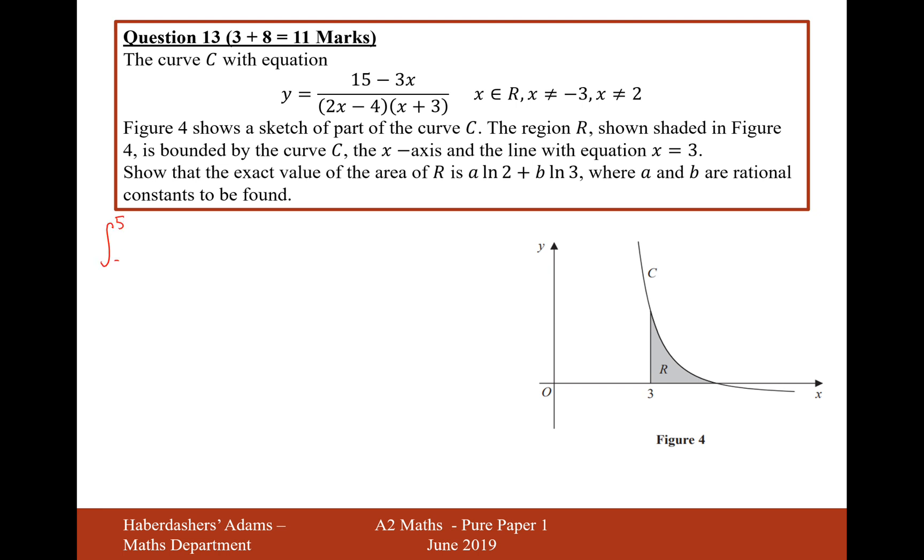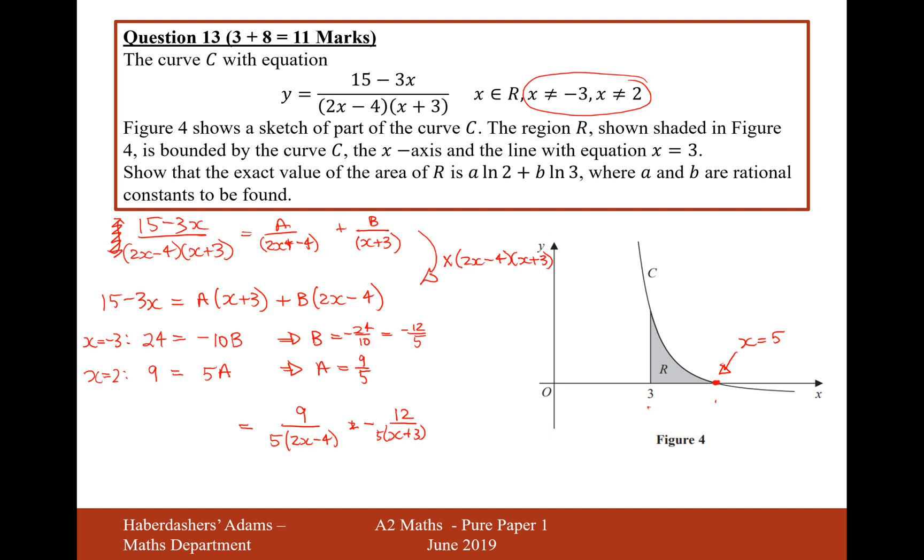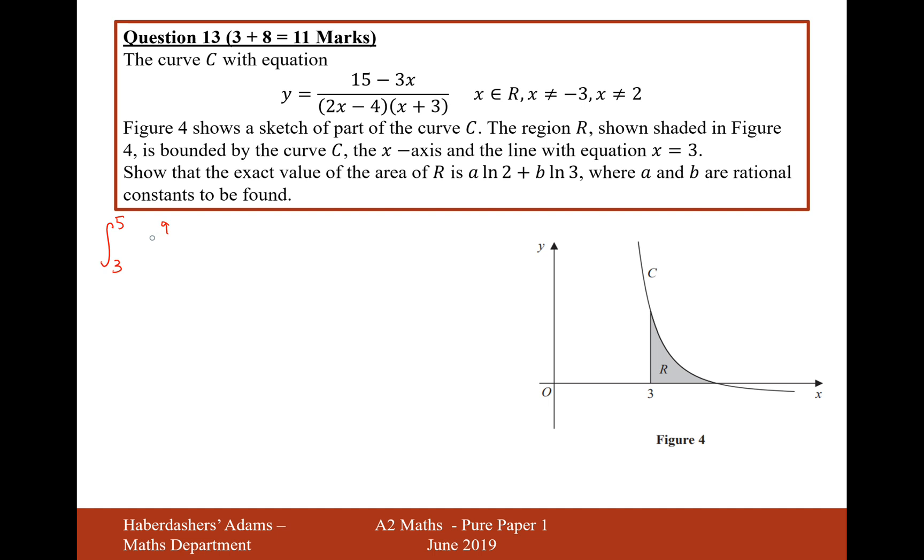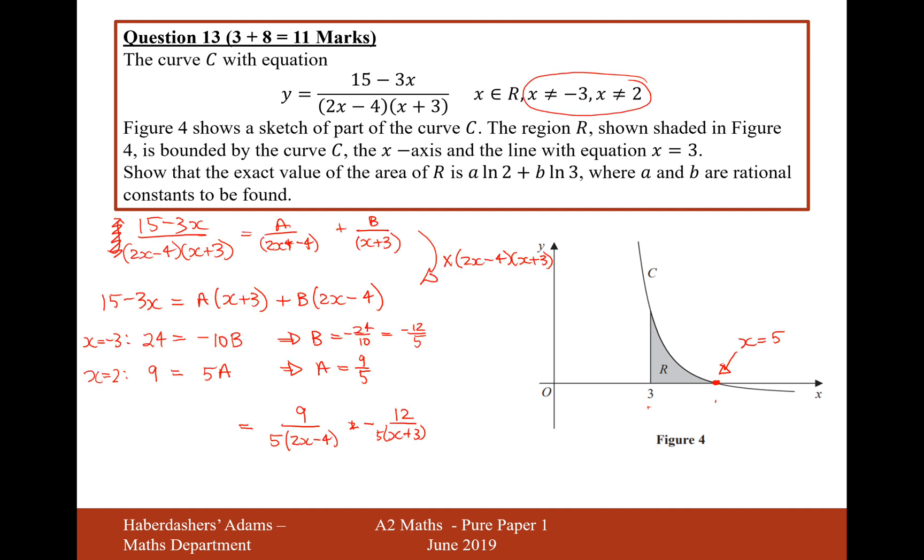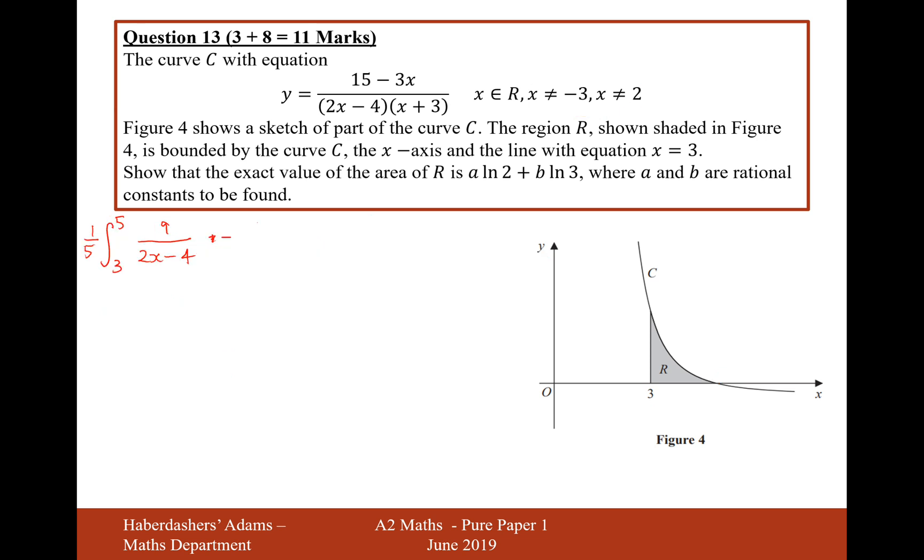It'll be 5 to 3 of, in fact, I've already forgotten it, first one's 9 over 5. In fact, I'm going to just times that 5th to the front so it would make my life easier. 2x minus 4, and then it's going to be minus 12 over x plus 3 dx. Because both of these had a common factor of a 5th on them, I've just factorized that 5th to the front.